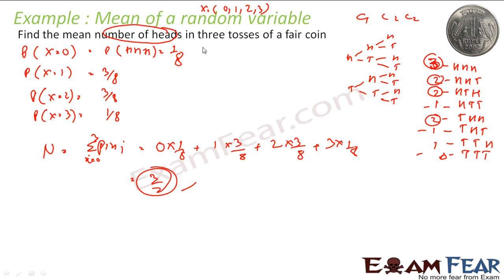Simple — first you define the random variable. Here x is the number of heads and it can vary from 0, 1, 2, or 3. You find the probability distribution for these values and then compute the mean.